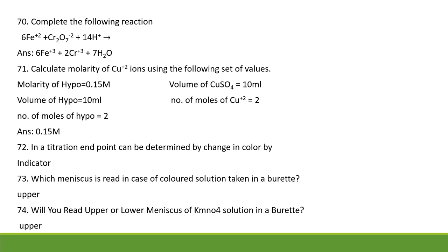Calculate molarity of copper ions using the given values. Using the formula M1V1/N1 = M2V2/N2, where molarity of hypo, volume of hypo, number of moles of hypo, volume of CuSO4, and number of moles of Cu²⁺ are given, the molarity of Cu²⁺ ions works out to 0.15 M.